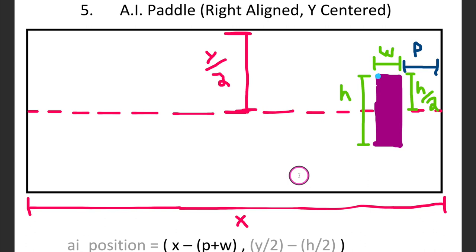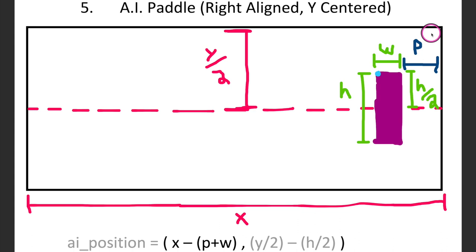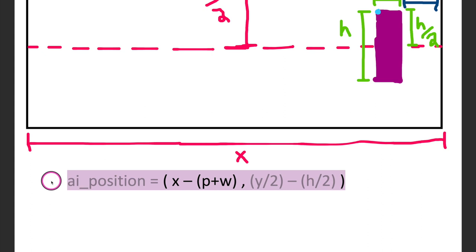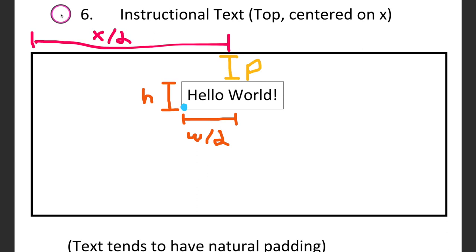We can do the same for our AI paddle — the Y axis coordinate is similar. However, to place the paddle on the right side, we need the screen width X, subtract the padding and the width of our player paddle to get it aligned mirror-like. Our formula: AI position equals (screen_width - padding - paddle_width, half_screen_height - half_AI_paddle_height). Just by drawing it out, we can see how we get our formulas for the position of our drawings.